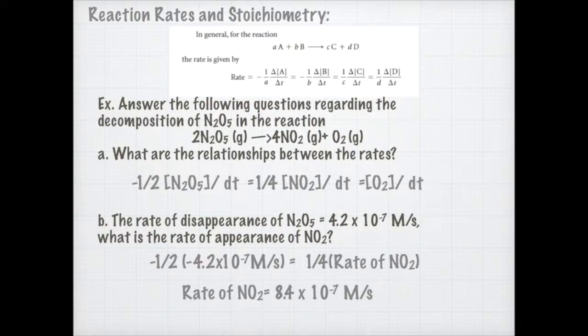Notice I made the 4.2 negative and that's because it's the rate of disappearance, making sure that the rate of NO2's appearance is positive. So the rate of something disappearing is negative. The rate of something appearing is positive.